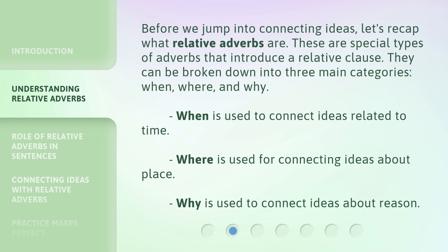Before we jump into connecting ideas, let's recap what relative adverbs are. These are special types of adverbs that introduce a relative clause. They can be broken down into three main categories: when, where, and why. When is used to connect ideas related to time. Where is used for connecting ideas about place. Why is used to connect ideas about reason.